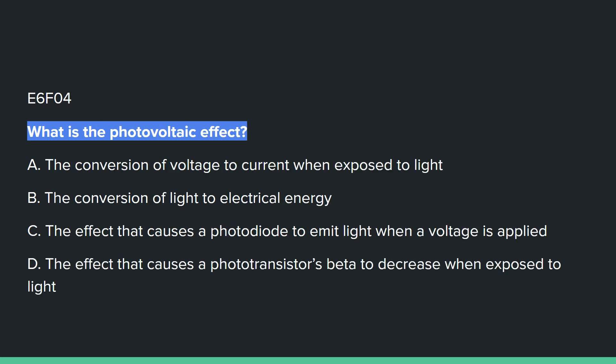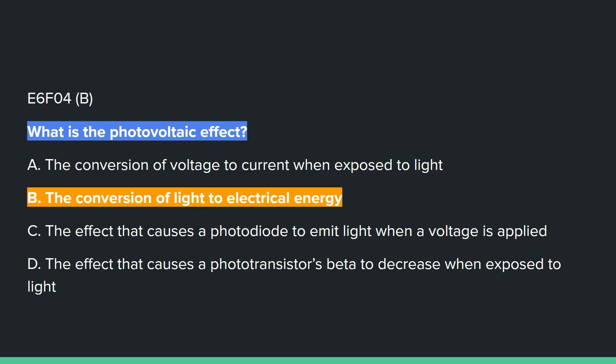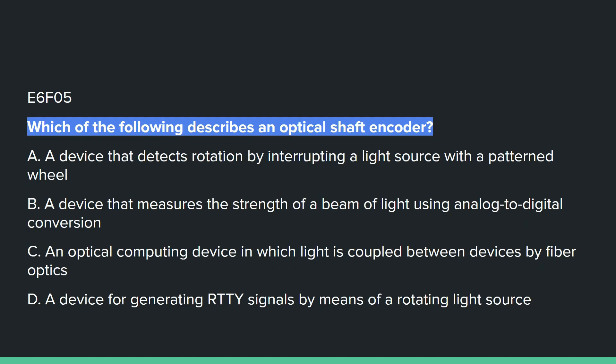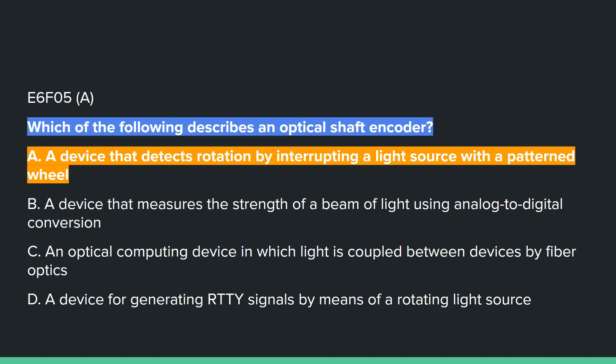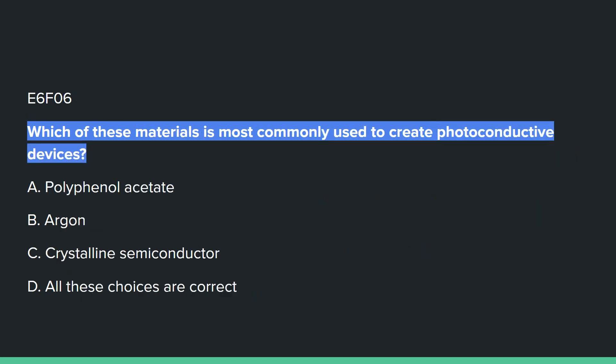E6F04: What is the photovoltaic effect? B, the conversion of light to electrical energy. E6F05: Which best describes an optical shaft encoder? A, a device that detects rotation by interrupting a light source with a patterned wheel. E6F06: Which of these materials is most commonly used to create photoconductive devices? C, crystalline semiconductor.